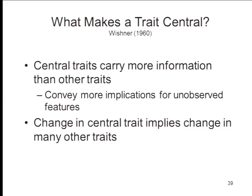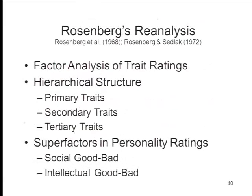What Wishner discovered was that words like warm, cold, intelligent, and unintelligent are more highly correlated with other trait terms than are words like polite and blunt. As Wishner put it, central traits carry more information than other traits because of the pattern of correlations associated with them. If I tell you somebody is warm, you can draw on those correlations and make all sorts of inferences about other qualities. If I tell you somebody is polite versus blunt, there aren't that many correlations to draw on. It's the pattern and strength of correlations that makes a trait central — or not.